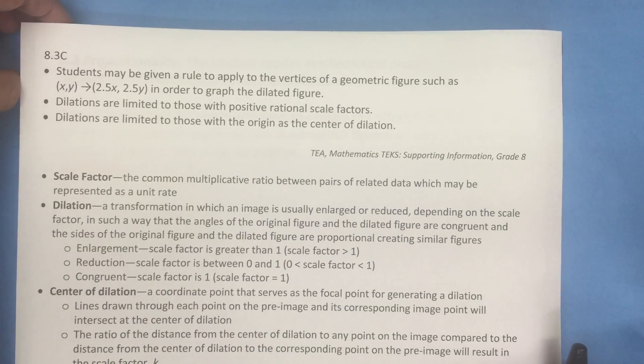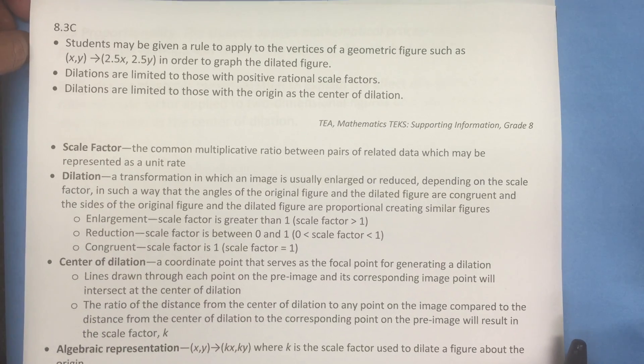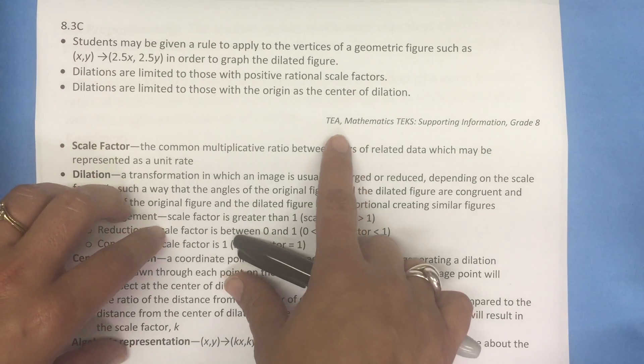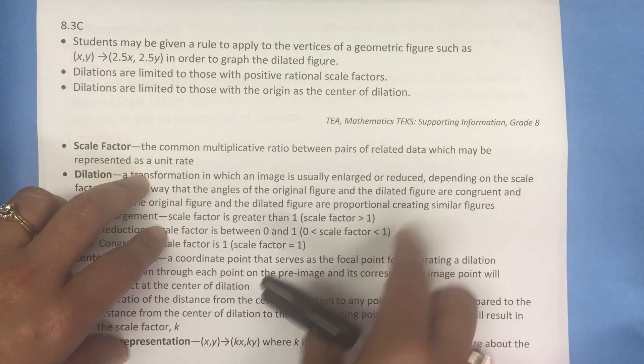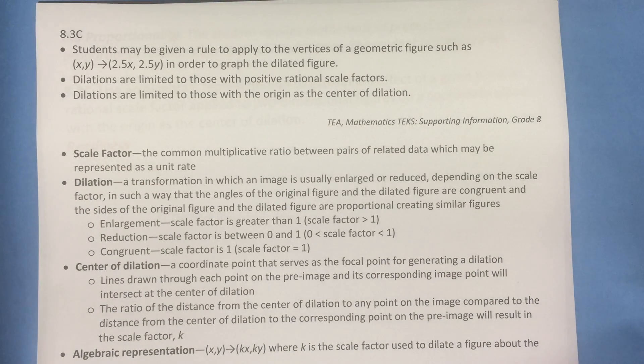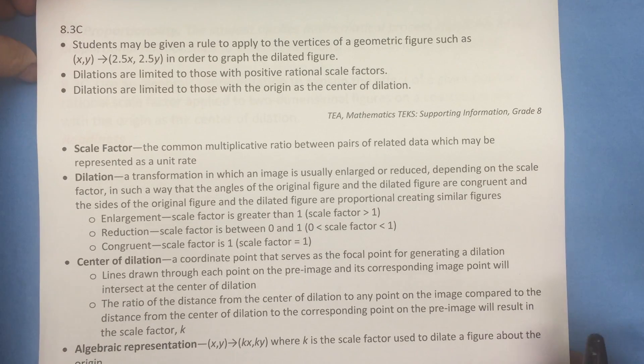I would like to share with you some information that comes from TEA. The information comes from the mathematics TEA supporting information for grade 8. In that document it says that students may be given a rule to apply to the vertices of a geometric figure such as xy is transformed to 2.5x, 2.5y in order to graph the dilated figure. Dilations are limited to those with positive rational scale factors and dilations are limited to those with the origin as a center of dilation.